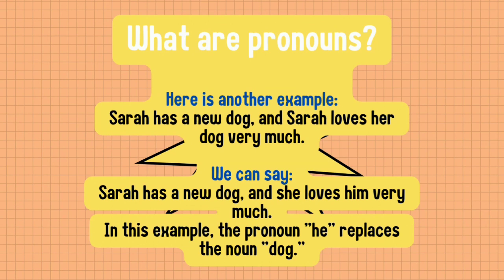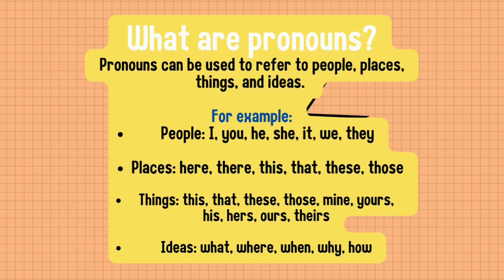In that example, the pronoun 'she' replaces the noun Sara. I would also like to explain that pronouns can be used to refer to people, places, things, and ideas. For people we can use: I, you, he, she, it, we, they. For places: here, there, this, that, these, those. For things: this, that, these, those, mine, yours, his, hers, ours, theirs. For ideas: what, where, when, why, how.